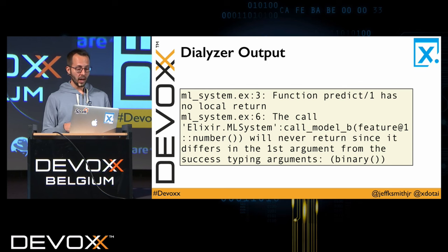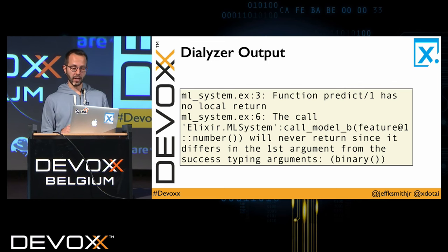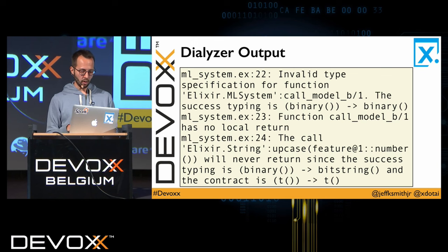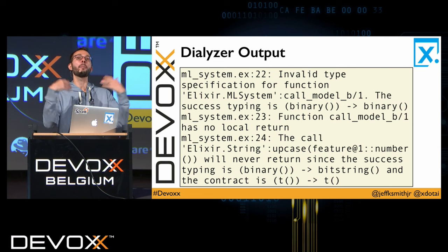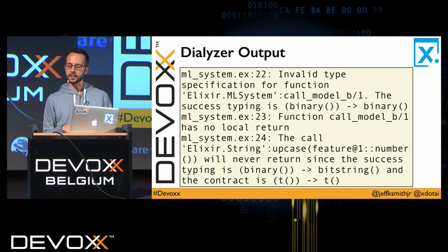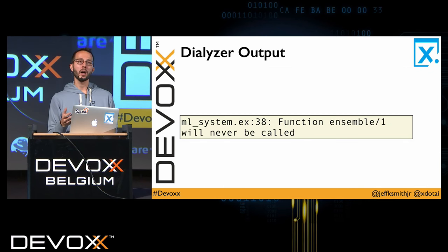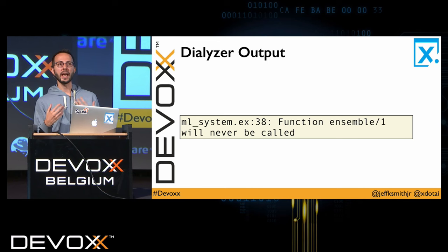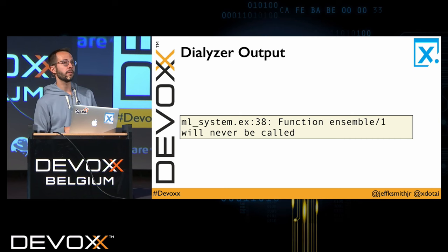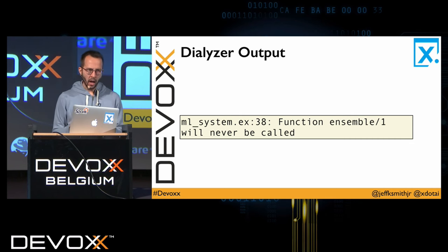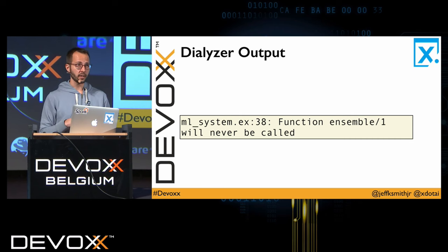After we've compiled our code, we optionally run Dialyzer on top. What it tells us is we can't perform a prediction because there's a type error within the invocation of Model B — in particular, we cannot call String.upcase on the number three, that's not a valid type. The actual top-level ensemble function will never be called in this case. So after compilation we've determined certain behaviors of our system that are undesirable. The fix is trivial: we can remove Model B from our library or fix the implementation, depending on what's most appropriate.